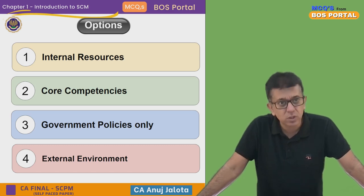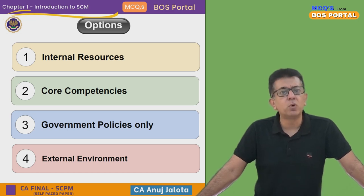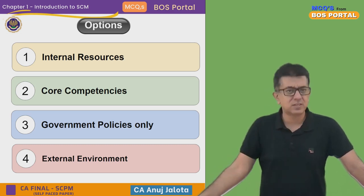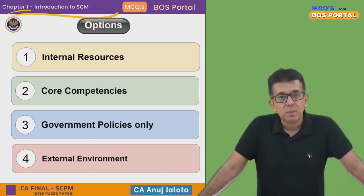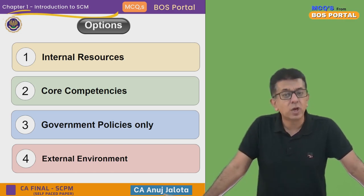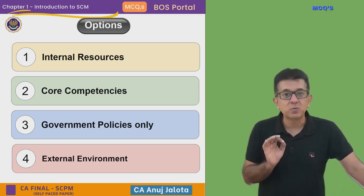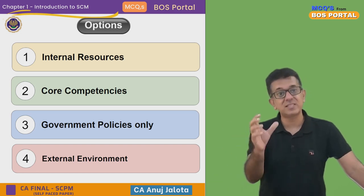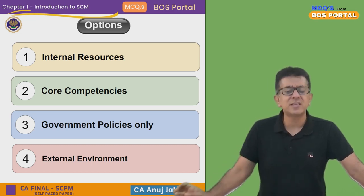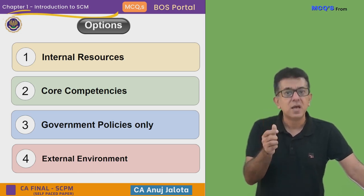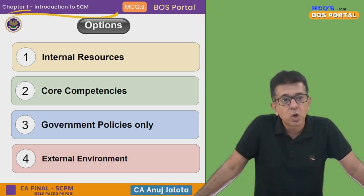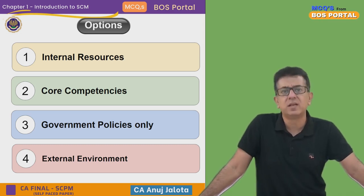Internal resources can give you some opportunity — if you have huge capital, you might get opportunities others don't. Your core competency can also give you more opportunity, but that opportunity basically comes from the external market. For example, if your after-sale service is very good — that's a core competency — it will only be useful when there is demand from customers, and demand from customers is an external factor. Government policy is just a factor; it doesn't give only you opportunities or threats — it affects everybody's business equally.